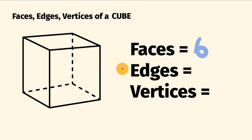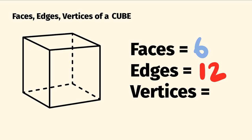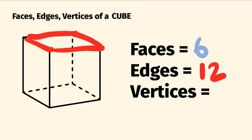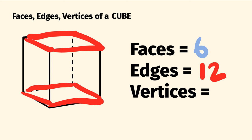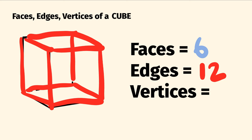Now we get to the number of edges. These are where the shape's faces meet. So a cube has 12 edges. Let's count them. So on the top, we have one, two, three, four. And on the bottom, we have one, two, three, four edges. Joining these two top and the bottom together, we have one, two, three, four edges. All together, we have 12 edges.